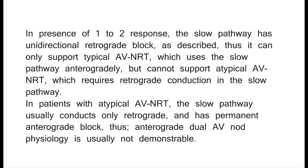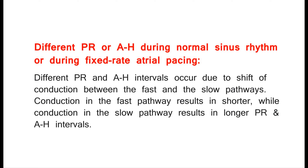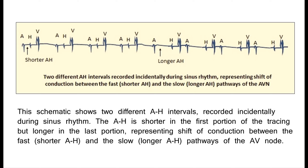Atypical AVNRT requires retrograde conduction in the slow pathway. In patients with atypical AVNRT, the slow pathway usually conducts only retrograde and has permanent anterograde block; thus anterograde dual AV node physiology is usually not demonstrable. Different PR or AH during normal sinus rhythm or fixed-rate atrial pacing occur due to shift of conduction between the fast and slow pathways. This schematic shows two different AH intervals recorded incidentally during sinus rhythm, with shorter AH in the first portion and longer AH in the last portion, representing shift between the fast and slow pathways of the AV node.